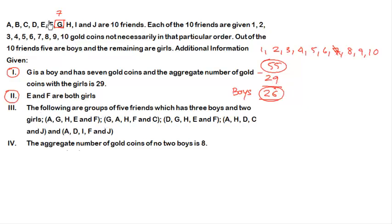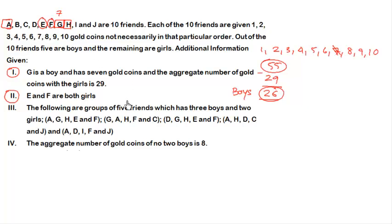The second condition says E and F are both girls — they are encircled. The third condition gives groups of 5 friends each containing 3 boys and 2 girls. In the first group, E and F are already girls, so the remaining three — A, G and H — must be boys. G is already a boy, so A and H are also boys.